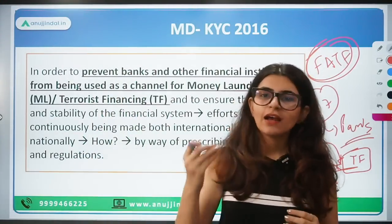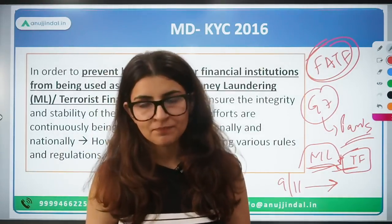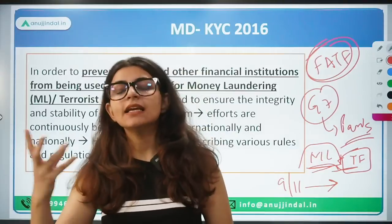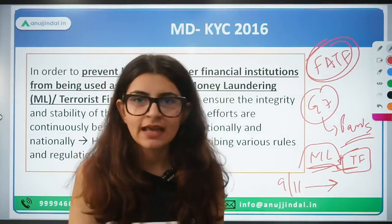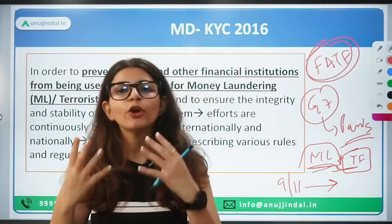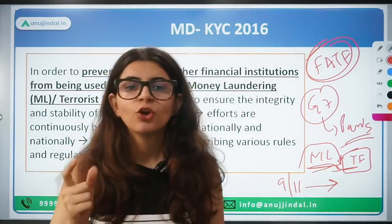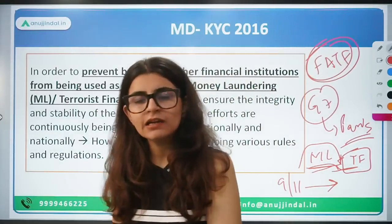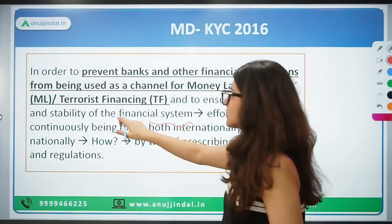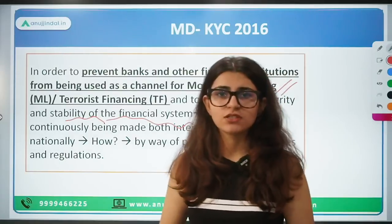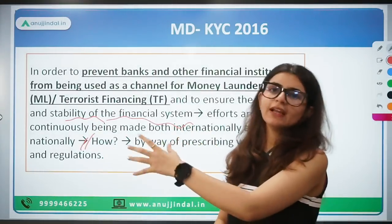Banks and other financial institutes can be used as channels towards money laundering. For example, if someone opens a bank account and from an illegitimate source money is coming in, and that money is utilized to promote terrorism, smuggling, or other suspicious acts — in that case, a bank or any financial institute is being utilized towards money laundering. So banks should not be used as a channel towards money laundering or terror financing. To maintain stability in the financial system, both internationally and nationally, we are working towards curbing money laundering and terror financing by bringing various rules and regulations.